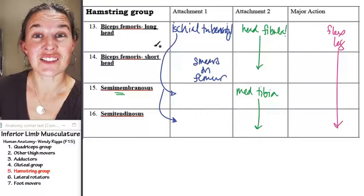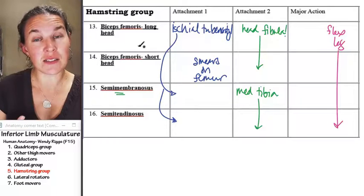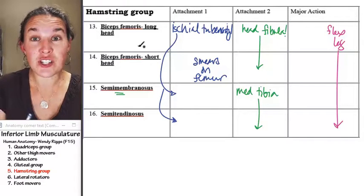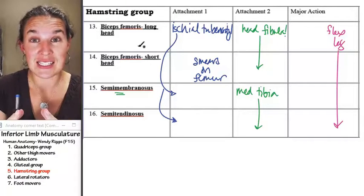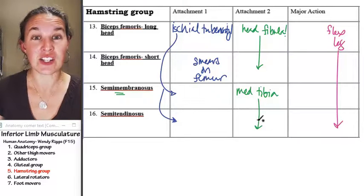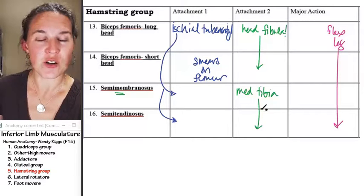If you go medial and palpate the same basic location on the medial side of your thigh, and get your fingers in there, you can actually feel two tendons, and that is semimembranosus and semitendinosus. And they're attaching to the medial side of the tibia, and you can feel both of them.